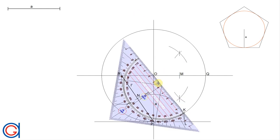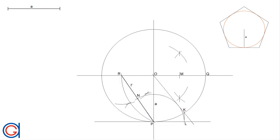We join the center point O with point K and elongate the line until it cuts the horizontal line at a new point which we call B, which is going to be a final vertex of the regular pentagon that we want to draw.